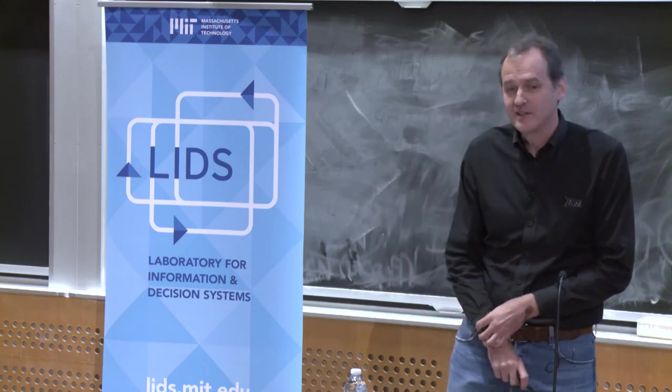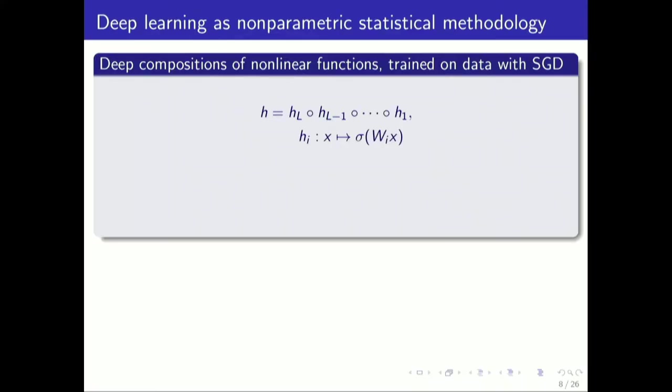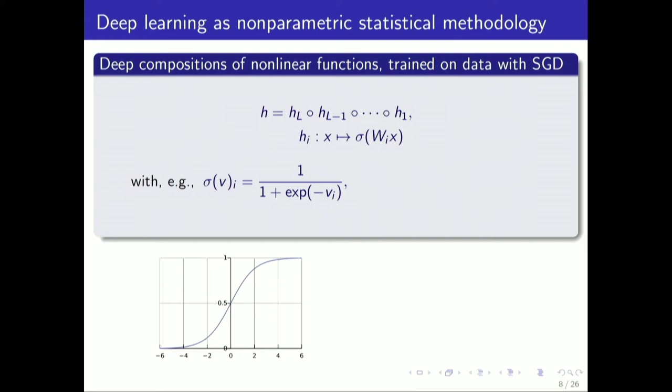I view it as a nonparametric statistical methodology. In particular, these networks are deep compositions of nonlinear functions. We can think of a function h as a composition of, let's say, l functions, if you have l layers in a network. Typically, these functions you can view as first take a linear function, a parameterized linear function, that's the W_i up there, and then pass that through a nonlinearity. Perhaps the nonlinearity is, in the 90s, it was always a sigmoid. More recently, these easier to compute piecewise linear functions are used.